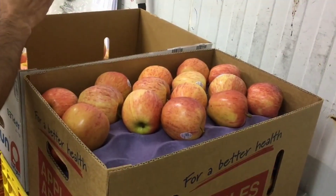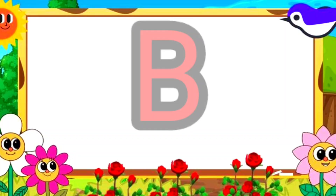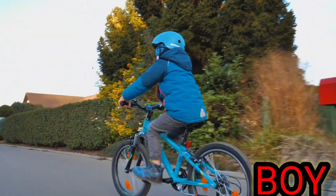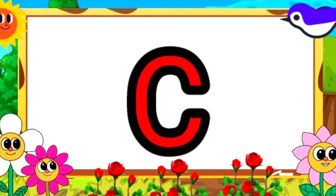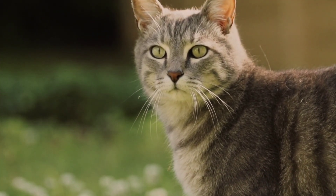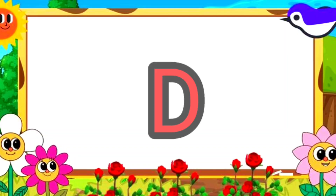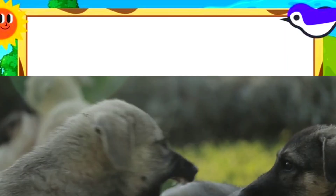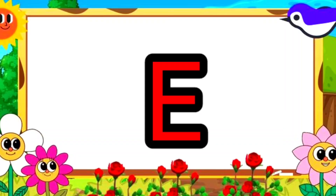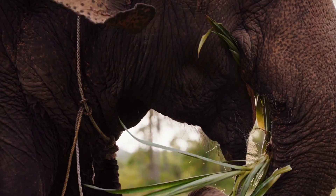A. A for apple. B. B for boy. C. C for cat. D. D for dog. E. E for elephant.